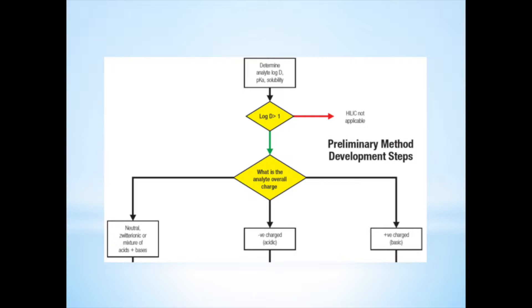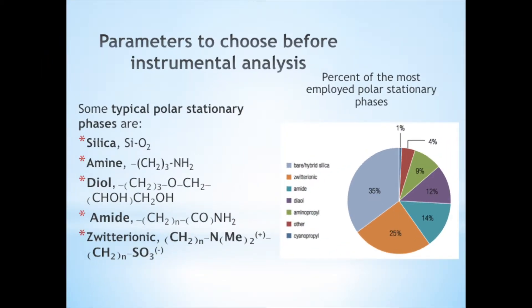To develop a method, first we must select an analyte, determine its log P, log D, pKa, and solubility in the mobile phase. If log D is larger than 1, then a HILIC method can be developed depending on the analyte's charge. Some typical stationary phases are silica, amide, diol, amine, and zwitterionic. The selection of the stationary phase depends on the physicochemical properties of the analyte. It is suggested to match the analyte's log D values to the degree of polarity of the HILIC phases. This is, the more negative the log D value for an analyte, the greater the degree of stationary phase polarity required to retain it.